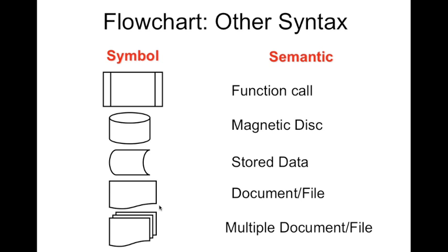These are other syntax of a flowchart. If we call a function within the algorithm we use this symbol for a function call. This symbol is for a magnetic disk, while this is for stored data. This is for a document, single document or file, while this is to denote multiple documents or files.